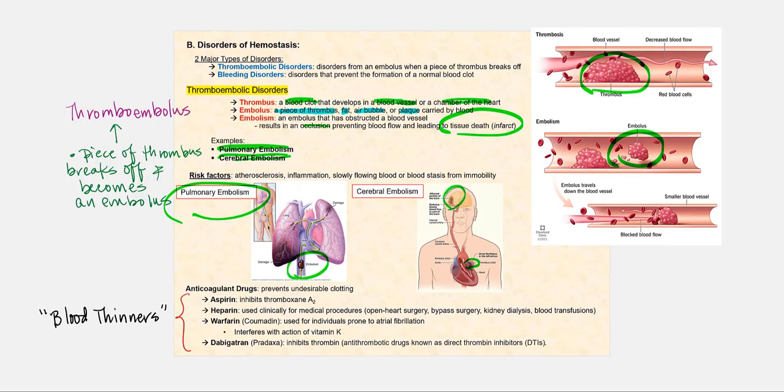So the risk factors will be atherosclerosis, inflammation, when the blood flows very slowly, or when blood does not flow at all due to immobility. An example, of course, is deep vein thrombosis. Please remember, any time there is injury to the blood vessel, there is a potential of forming a thrombus or a blood clot.